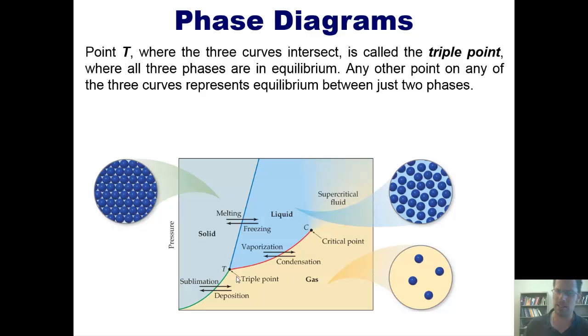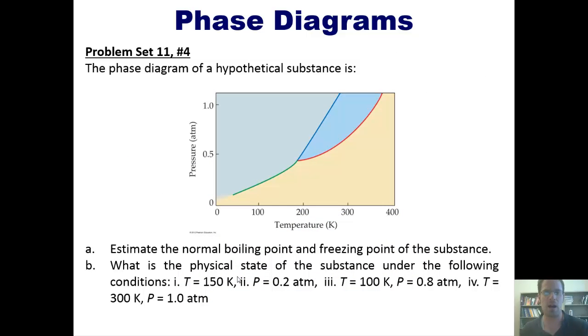Now, I realize that this might be unclear. Let's take a look at a problem. The phase diagram of a hypothetical substance is shown here. Question A, estimate the normal boiling point and freezing point of the substance. And question B, what is the physical state of the substance under the following conditions? Please pause the video right here and attempt to do it on your own. You can then hit play, and I'll show you the answer.